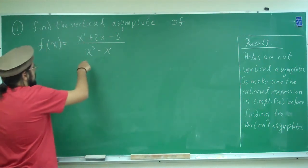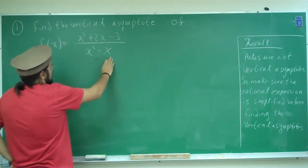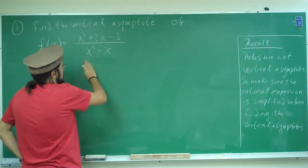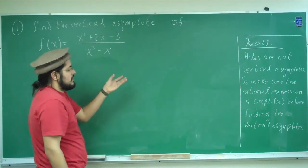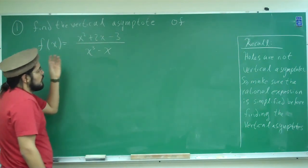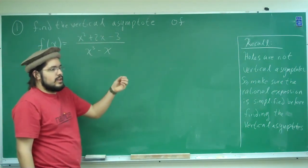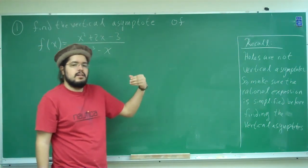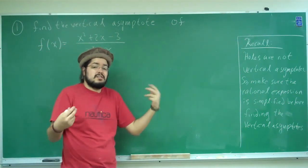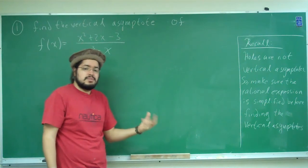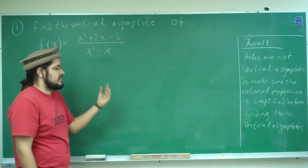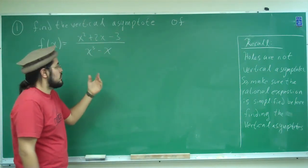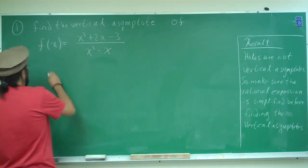If we were to just set the denominator equal to zero without simplifying first, we'd include values we think are vertical asymptotes when they are actually holes. So we want to simplify first.